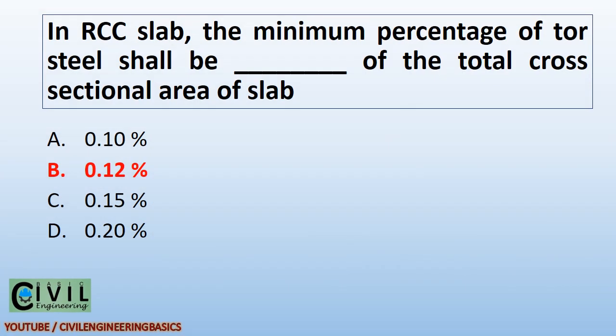In an RCC slab, the minimum percentage of tor steel shall be 0.12 percent of the total cross-sectional area of the slab. This means the steel provided should be a minimum of 0.12 percent of the total cross-sectional area of the slab.